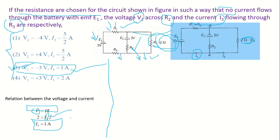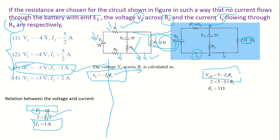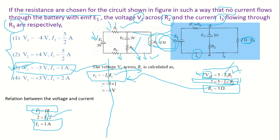Now let us calculate V2. V_AB across AB is given by 5 − I3·R2 = 5 − 1×R2. We know V_B is given as 2, so we can solve: 2 = 5 − R2, giving R2 = 3 Ω. Substituting back, V2 = I3 × R2 = 1 × 3 = 3 V, confirming option 3 is the right answer.